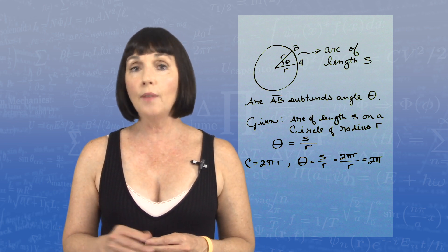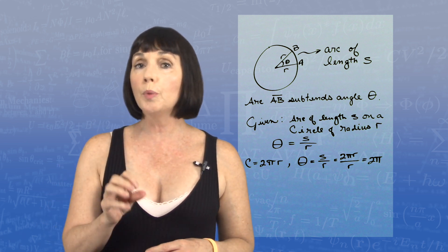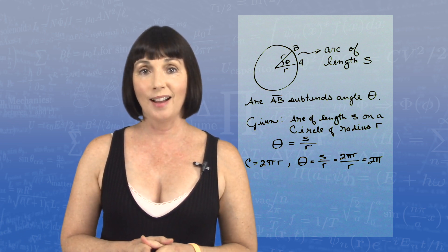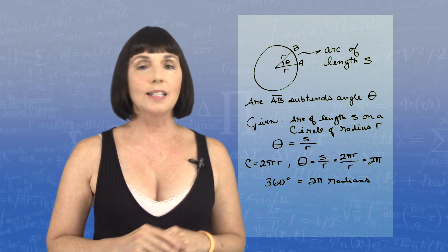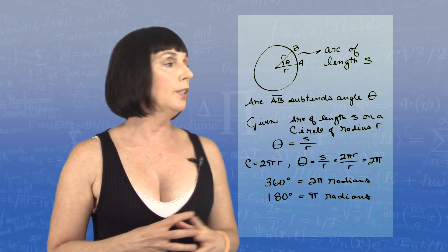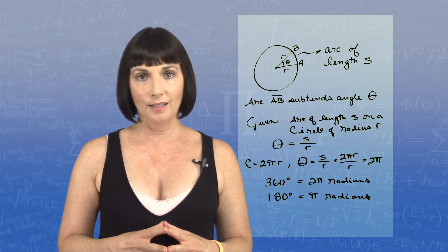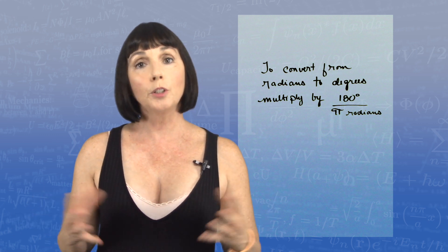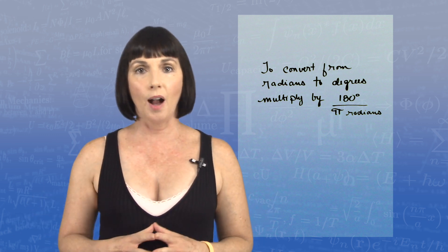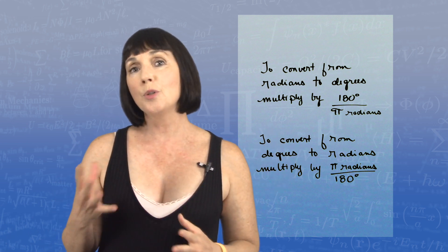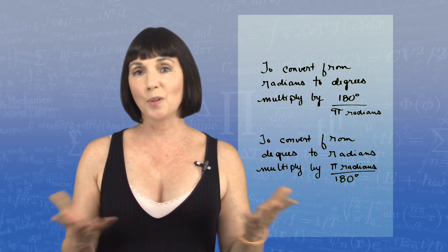If we traveled all the way around our circle, we would also have traveled 360 degrees. That implies that 360 degrees is equal to 2 pi radians, or 180 degrees equals pi radians. So if you need to convert from radians to degrees, you multiply by 180 over pi. And if you need to convert from degrees to radians, you multiply by pi over 180.